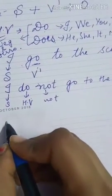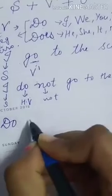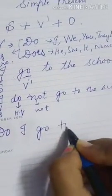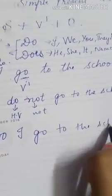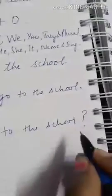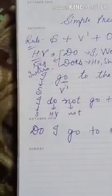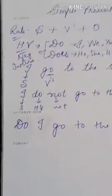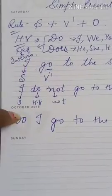If a question comes, I have to make an interrogative sentence. The helping verb comes first: 'Do I go to the school?' In an interrogative sentence, we put a question mark at the end. So: 'I go' — positive; 'I do not go' — negative; 'Do I go?' — interrogative.